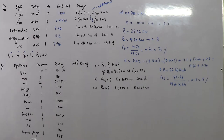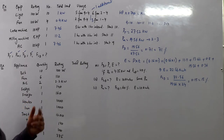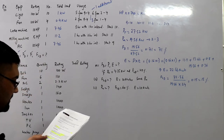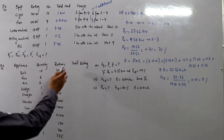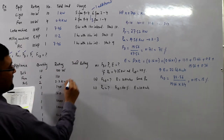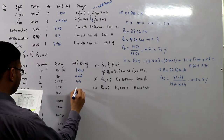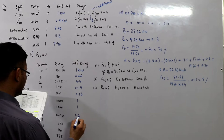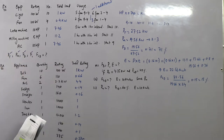Example number two: considering this table for a residential consumer. The appliances given are 10 bulbs, 6 fans, 2 air conditioners, a fridge, deep freezer, heater, iron, toaster, television, PC, and water pump. The individual ratings are in watts. The total ratings in kilowatts are: 1 kW, 0.66 kW, 4.4, 0.14, 0.16, 1, 1, 1, 1.2, 0.14, 0.1, and 0.375.